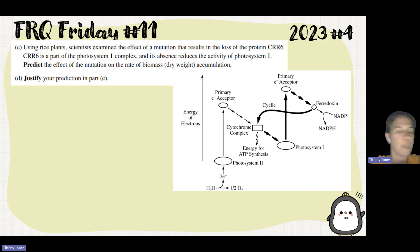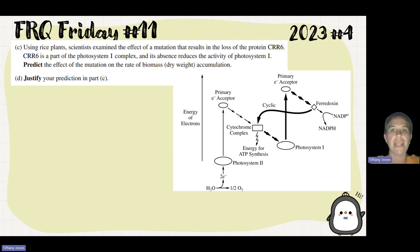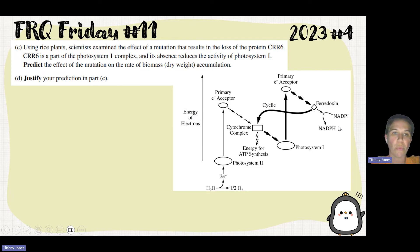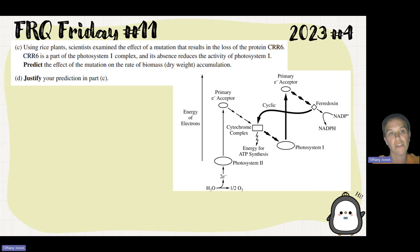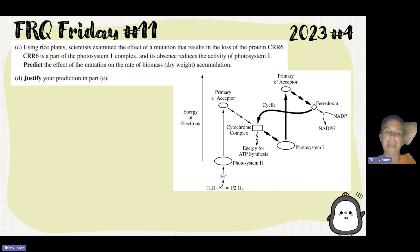Anytime they ask you to predict something, you should not leave it blank. The options are: biomass will increase, decrease, or stay the same. Since we're seeing a reduction in the activity of photosystem 1, and the whole point of this process is to synthesize ATP as well as NADPH, if we have less activity of photosystem 1, we can't make ATP or NADPH. So we'll see a reduction in biomass because we don't have the materials, the energy, and the electrons needed to synthesize carbohydrates — specifically G3P made in the Calvin cycle.